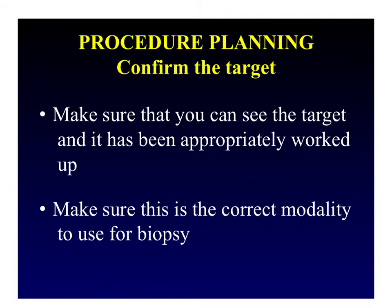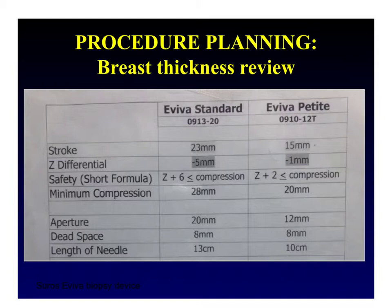Once you've confirmed your target, make sure that the breast is sufficiently thick for the biopsy. The Aviva standard needle has a minimum recommended compression of 2.8 centimeters, and the Aviva petite, used with smaller breasts, has a minimum compression of 2 centimeters. We typically do not perform stereotactic core biopsies in breasts that are less than 2 centimeters. Alternate approaches exist when the breast is smaller, but this is rarely performed and is beyond the scope of this video.